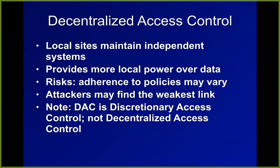Decentralized access control is where you let every branch location make local decisions about access control. This makes it possible for branch offices to do what they have to do, but there's a risk that certain branch offices might have poor security policies. Discretionary access control, called DAC, is not the same as decentralized access control.